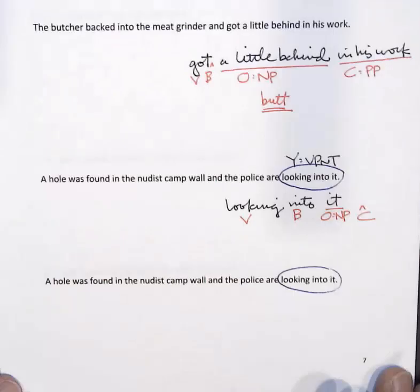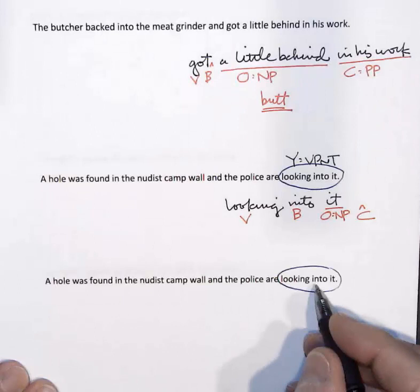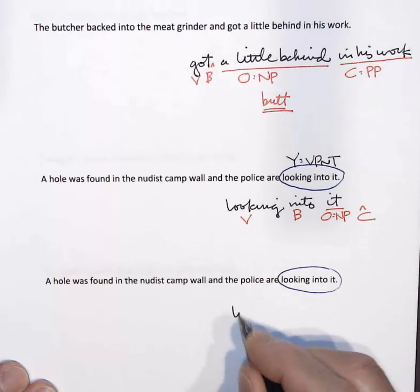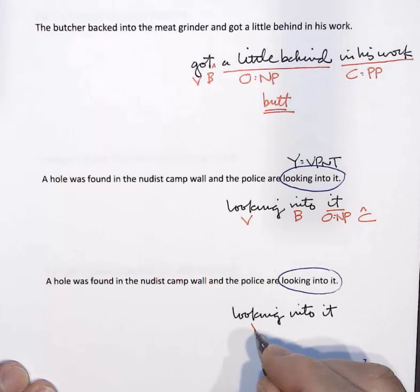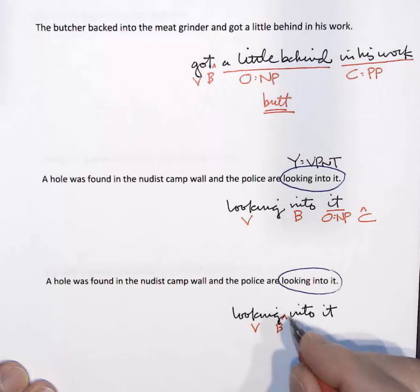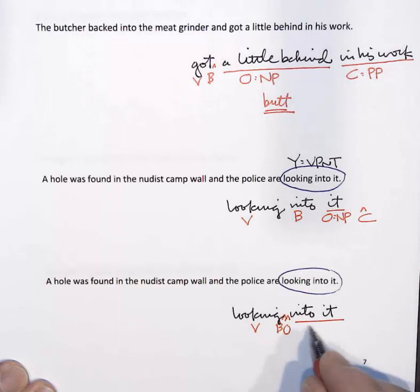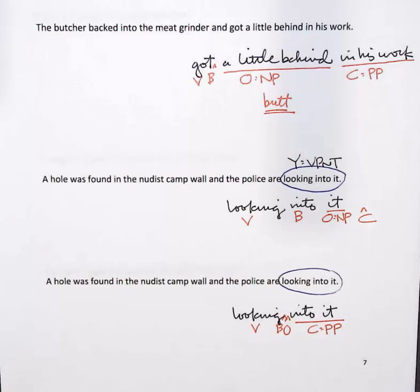In the second analysis, the same words are parsed differently: 'looking' is the verb, the particle place is empty, the object place is empty, and 'into it' is the complement — a prepositional phrase. This means the police are actually standing by the hole and physically looking into it, perhaps bending down and looking through the fence.